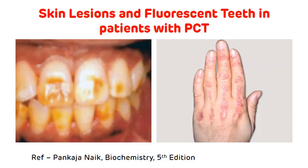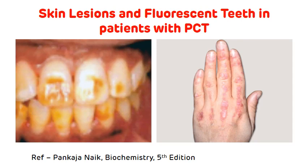Various skin lesions, photosensitivity blisters, and fluorescent teeth are seen. When light is passed, fluorescent teeth are seen in porphyria cutanea tarda.